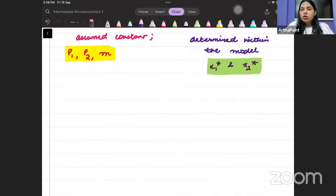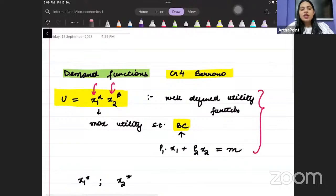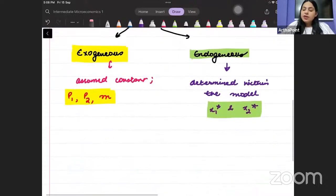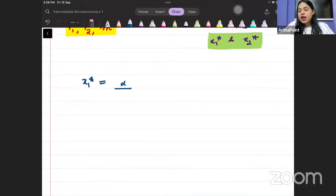Now if you remember, go to chapter number 3 and try to see that when I was doing that chapter, we found out that x1 star, the optimal demand came, it was alpha upon alpha plus beta, Beta, M by P1. That was my optimal demand of x1.